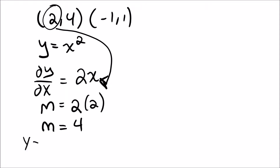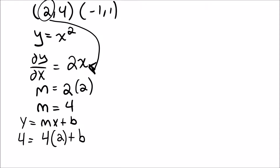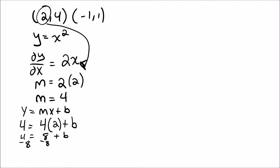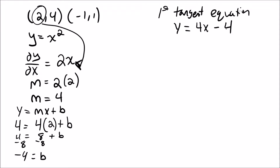A tangent line has the form y equals mx plus b. Substituting the slope 4 and the point (2, 4): 4 equals 4 times 2 plus b, so 4 equals 8 plus b, giving b equals negative 4. So the first tangent equation is y equals 4x minus 4.